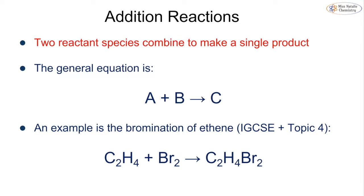When looking at types of reactions, the first one is an addition reaction, which you'll have met back in IGCSE as well as in topic 4. An addition reaction is where we have two reactant species combining to make a single product, A plus B giving you C. A reaction example would be the alkene ethene adding bromine to form dibromoethane. You'll discuss the halogenoalkanes further in topic 10.